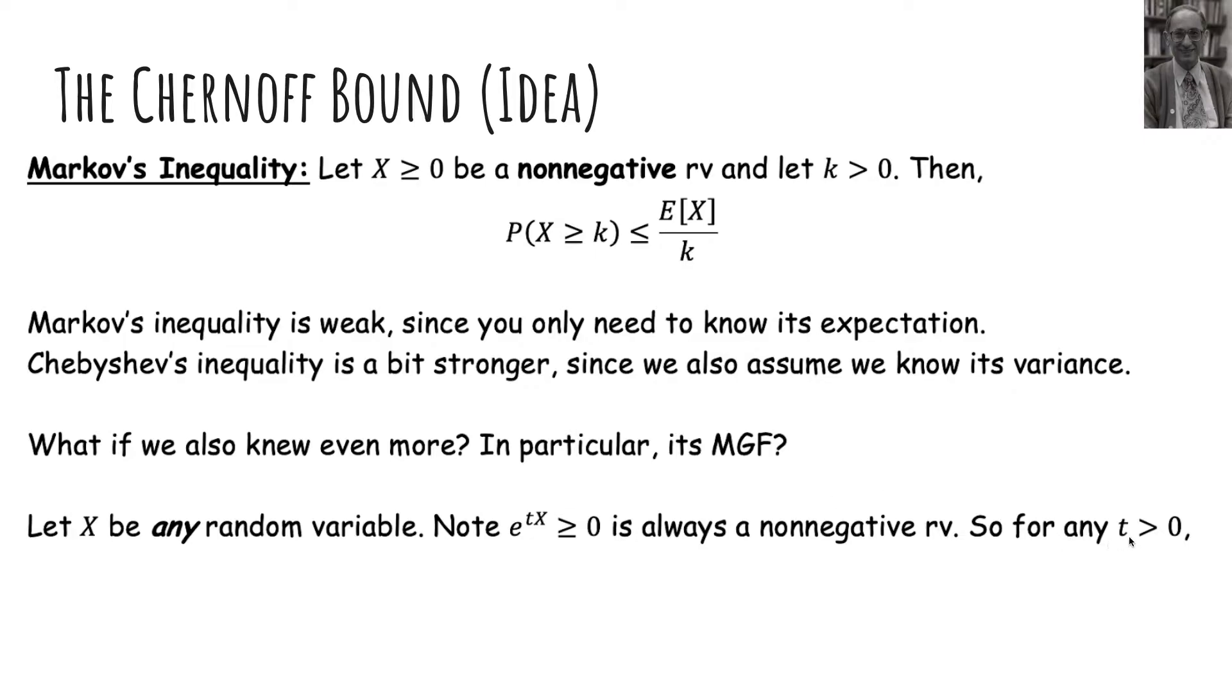And now what I'm going to do is say for any positive t, I'm going to take my probability x greater than k, and I'm going to exponentiate both sides. And this inequality stays the same direction only because t is greater than zero. If t were less than zero, then the inequality here would actually flip.